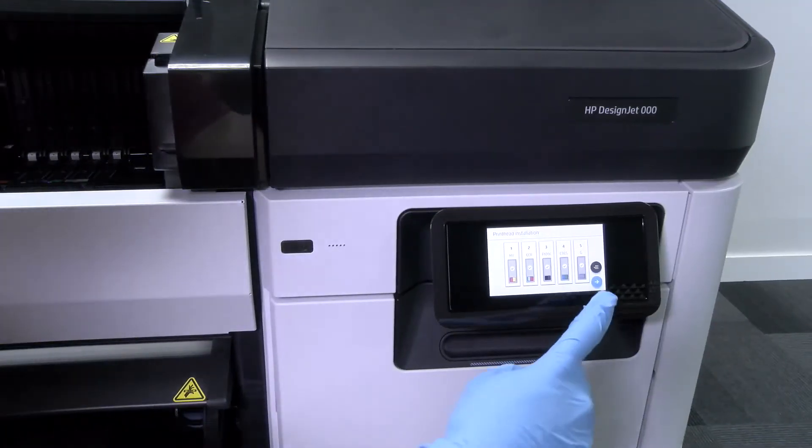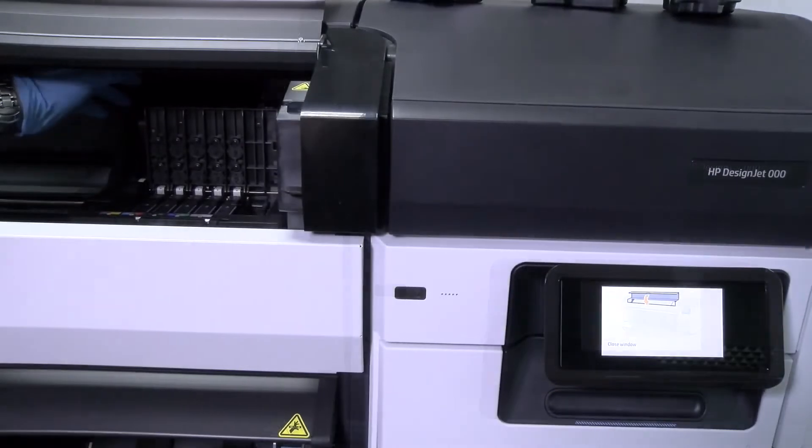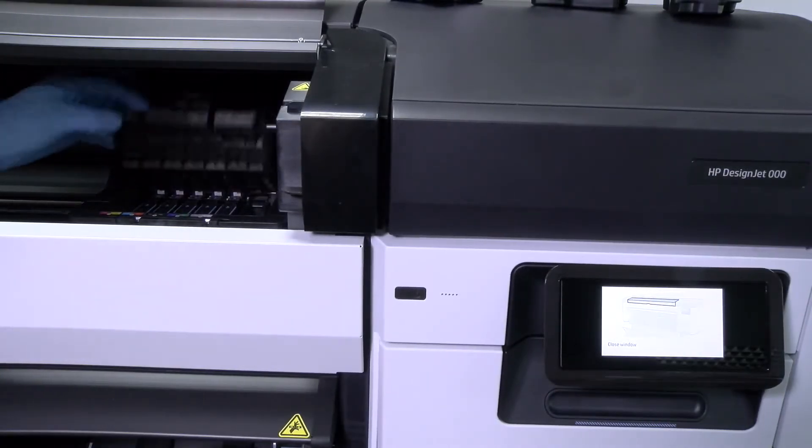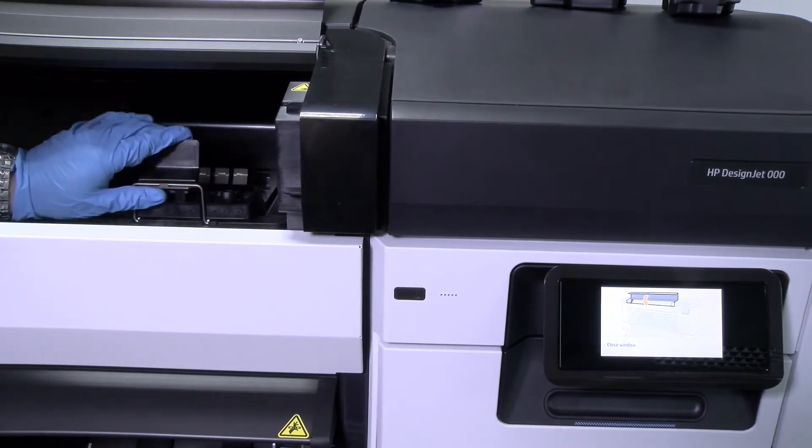The front panel will detect and display the printheads once they're inserted. Close the printhead cover, the carriage latch, and the window. After closing the window, the printer will purge the printheads.